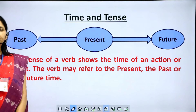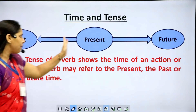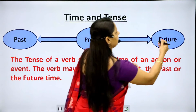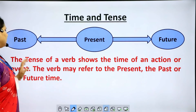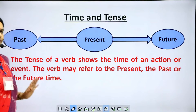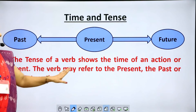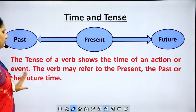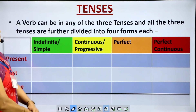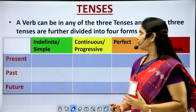What is the relationship between time and tense? This is present. If we go backwards, this is past. And if we move forward in time, this is future. The tense of a verb shows the time of an action or event. The verb may refer to the present, the past, or the future time. A verb can be in any of the three tenses: the present, the past, or the future.